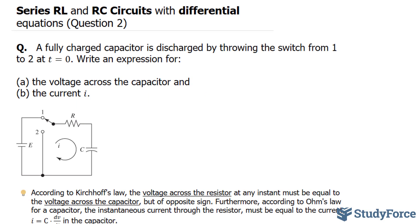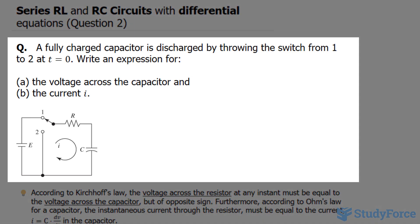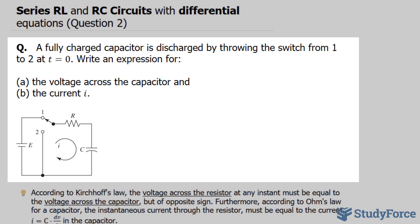In question 2 of this series, we'll focus specifically on RC circuits. We're asked: a fully charged capacitor is discharged by throwing the switch from position 1 to position 2, at time equal to 0. Write an expression for the voltage across the capacitor and the current I.